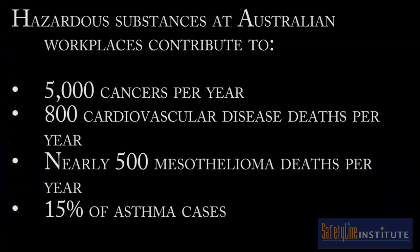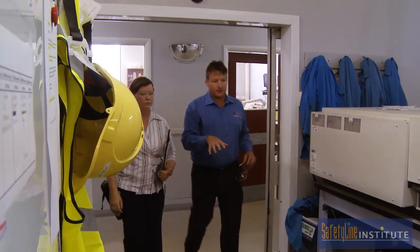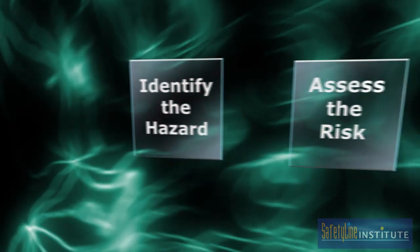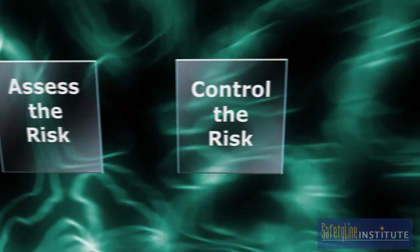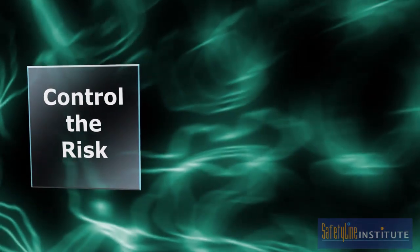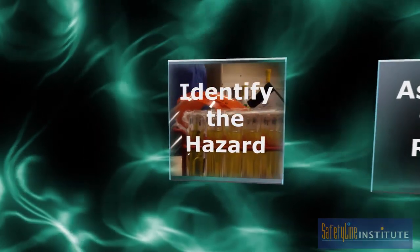Hazardous substances are a major workplace hazard. It is vital to secure the health and safety of workers by undertaking adequate risk management. This film will show you how to identify chemical hazards, assess the risk of injury or harm, and control the risk. Let's see how hazardous substances at work can be identified.